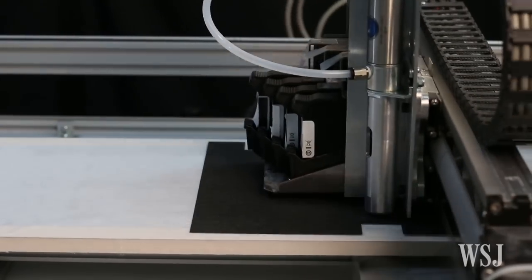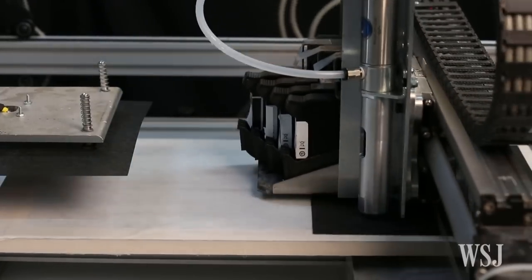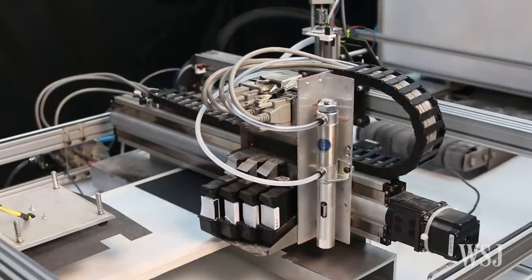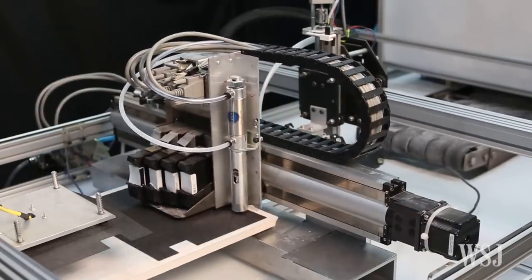Unlike traditional 3D printers, Impossible Objects machine works by printing each layer of plastic on a separate sheet of carbon fiber or another fabric, such as Kevlar, polyester, or silk.